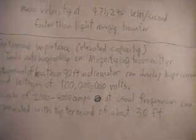Here's the final part of this, and after this I have to say this fast because I'm running out of tape. Top terminal's importance: it's an elevated capacity. Test the autobiography on magnifying transmitter, if you look that up. Theoretical terminal of less than 90 feet in diameter can develop huge current and voltages of 100 million volts. That's extremely high. Currents of 2,000 to 4,000 amps at usual frequency can be generated with top terminal of about 30 feet.